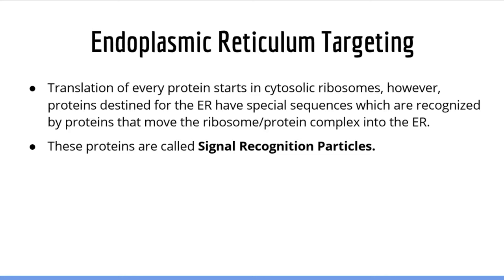These proteins are called signal recognition particles and are essential for targeting ribosomes and proteins to the endoplasmic reticulum. Without signal recognition particles, proteins normally sent to the endoplasmic reticulum would accumulate in the cytosol.